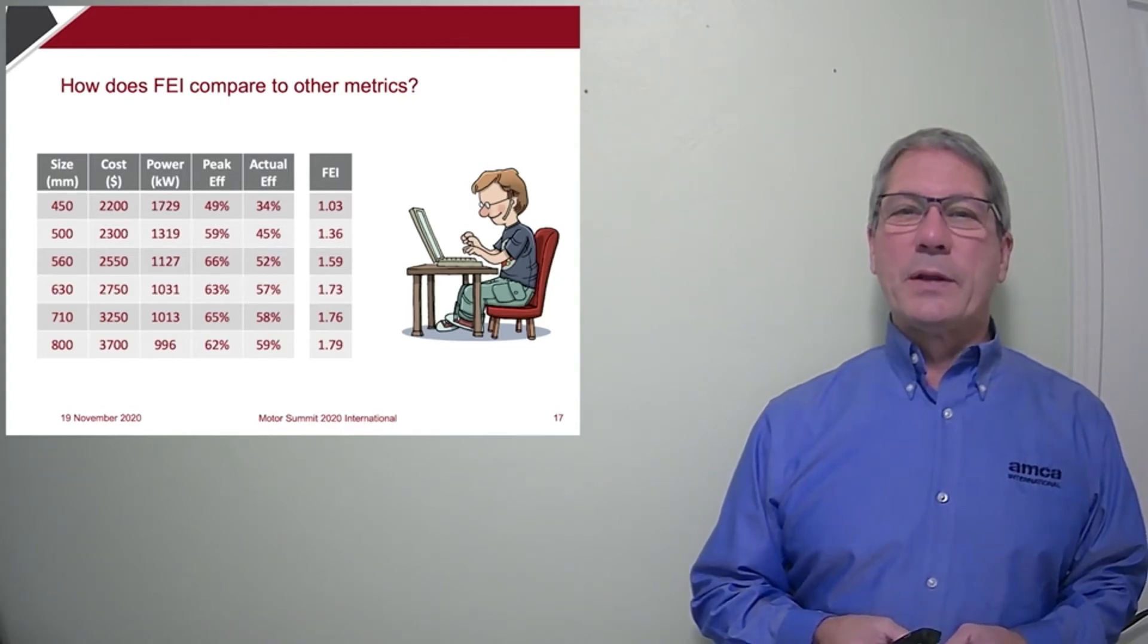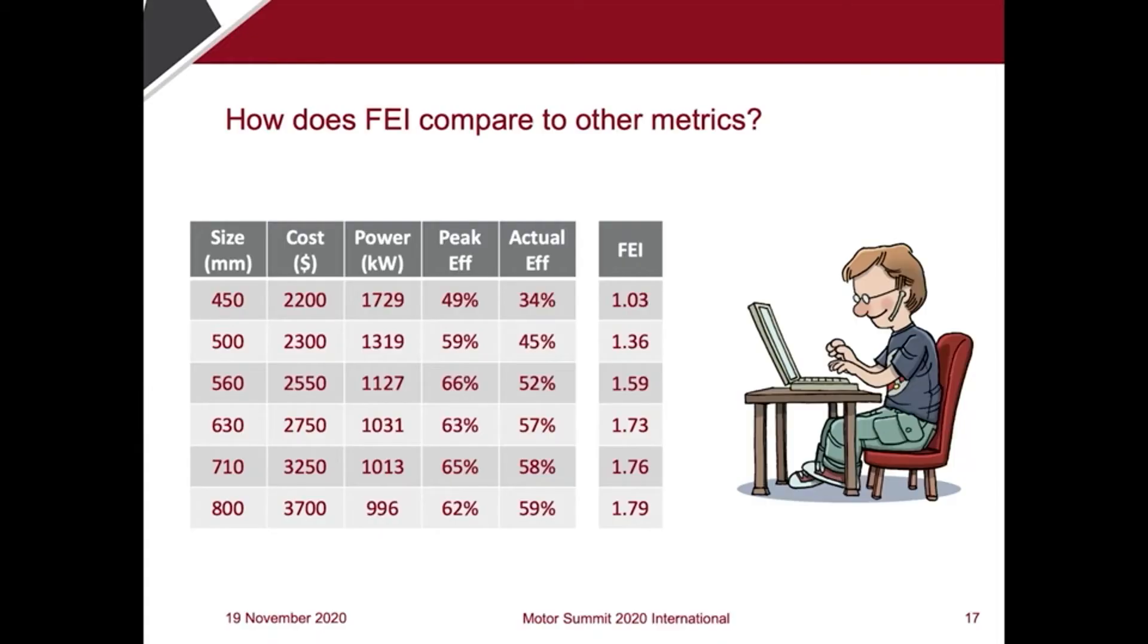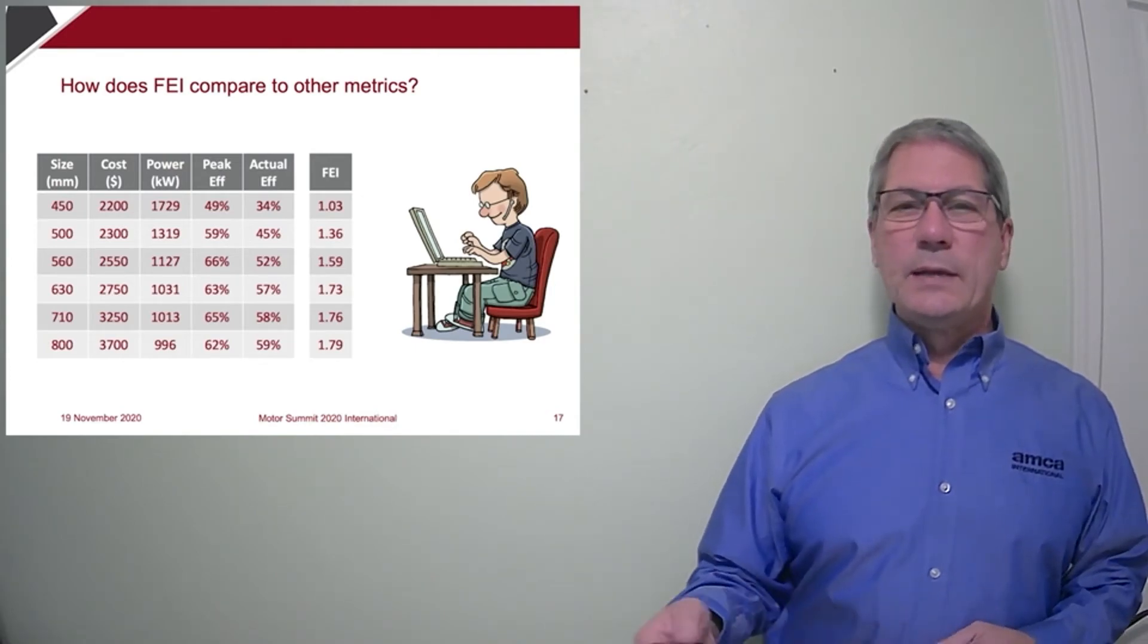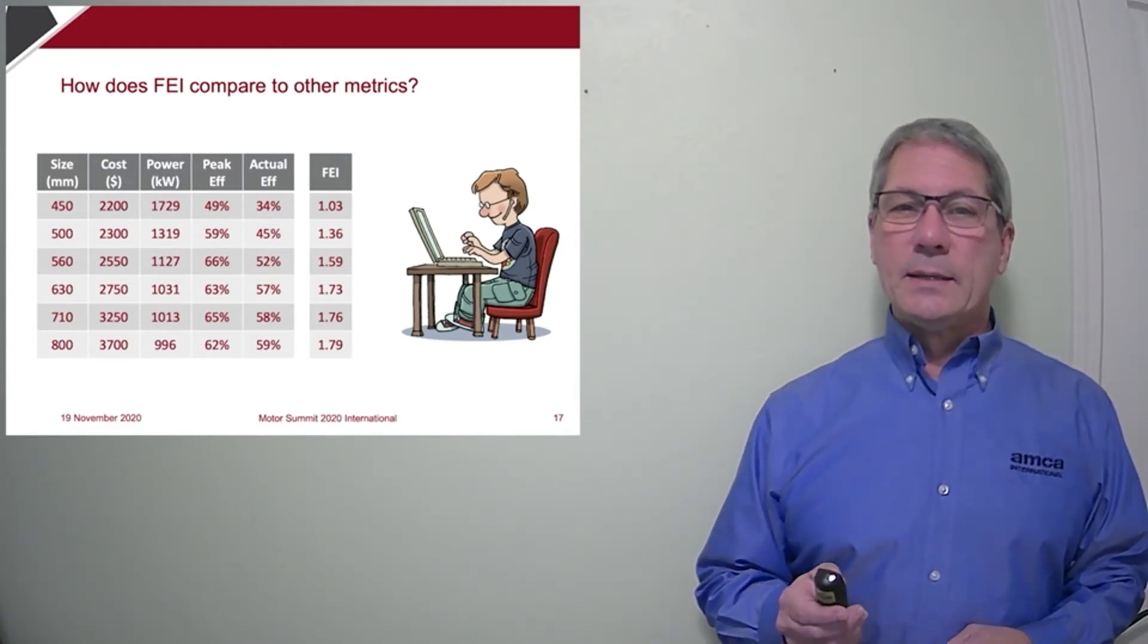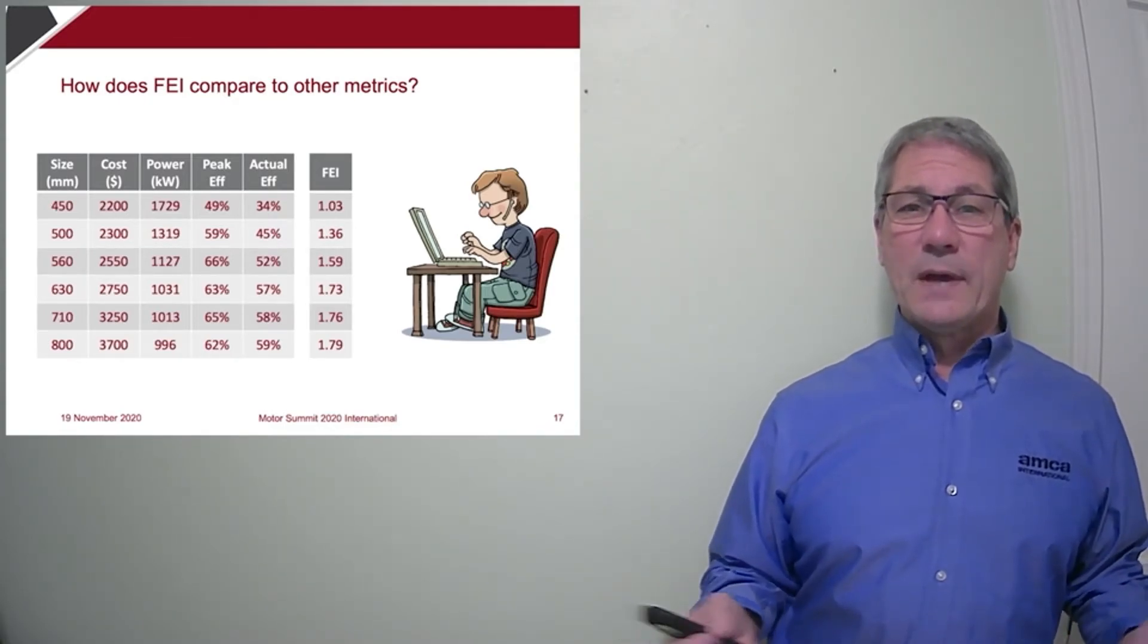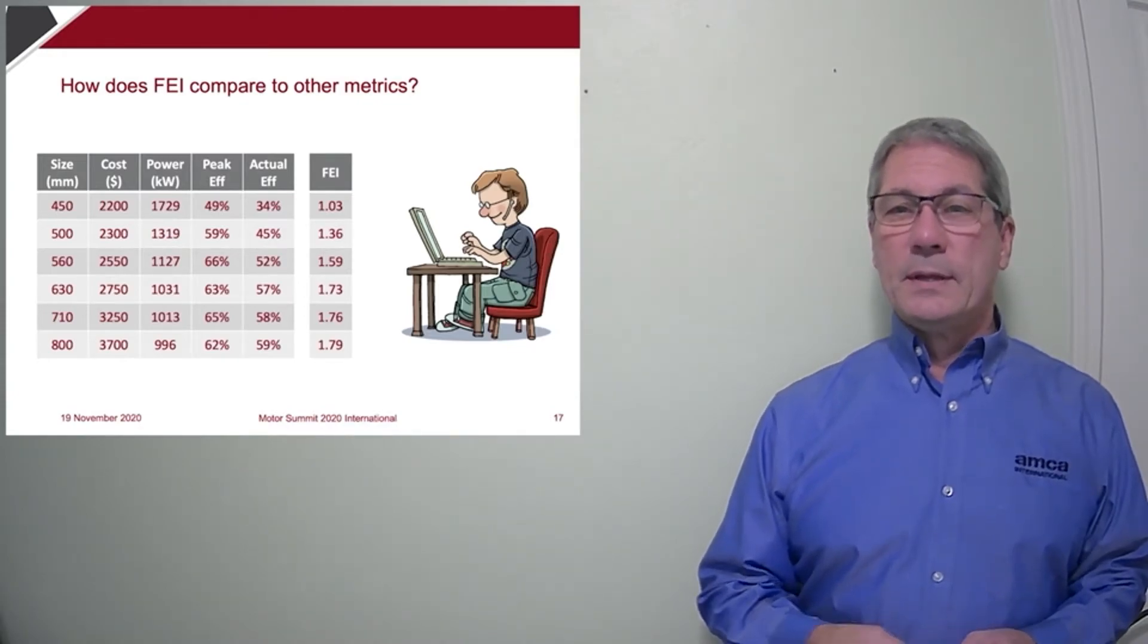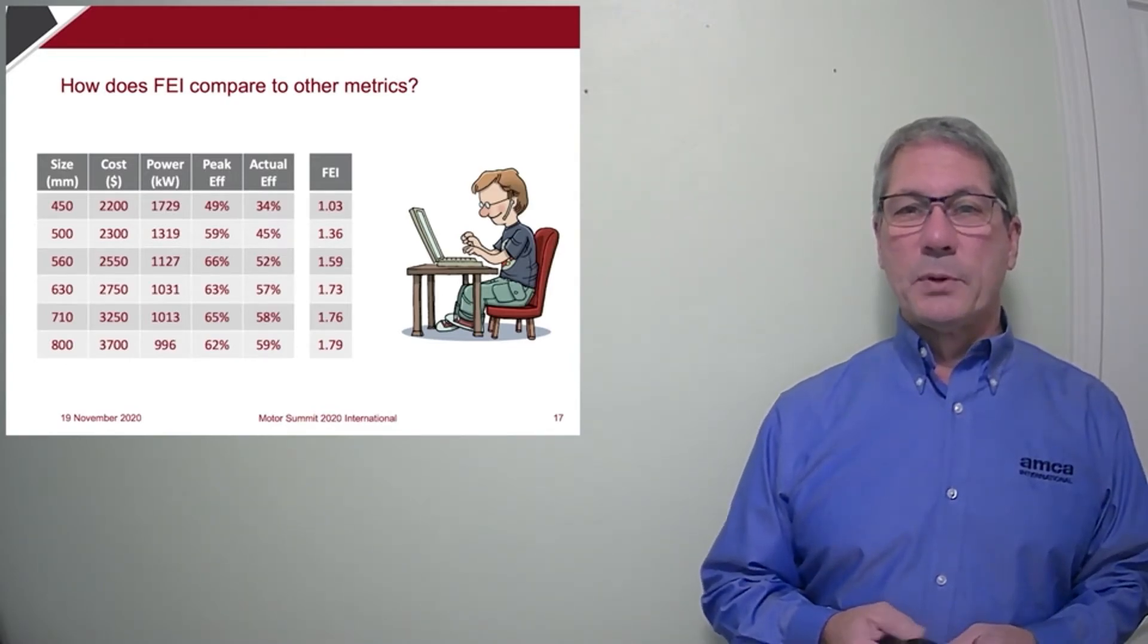So how does FEI compare to other energy efficiency metrics? And remember, you get what you measure. Well, any peak efficiency metric, whether it's FEG or FMEG, will have about the same, if not exactly the same value for each of these fan sizes, since they're the same model. And this happens to be a very efficient model. So any of these sizes will pass based on any peak efficiency metric. But FEI is focused on the decision maker. In this example of simply picking the fan size, there's about a 75% difference in power consumed. And the FEI value varies by 75%. A perfect correlation.